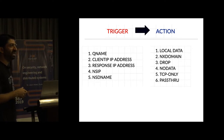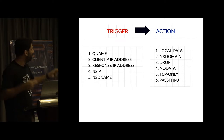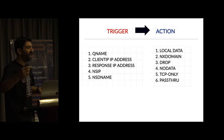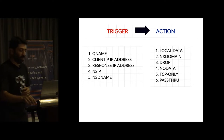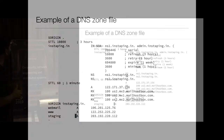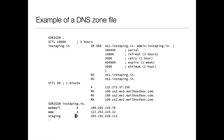The first example is Q-name, which stands for query name. If the query name matches a specific DNS record, you can set an action: drop it, or respond to the client saying this is a non-existing domain — NX domain stands for non-existing domain. Before the demo, let me go through a sample DNS zone file. I'll focus on the last three lines: these are called resource records. For example, webmail.instaping.in is pointing to IP address 106.201.125.7, and www.instaping.in is pointing to 122.252.225.22. That is how DNS works.